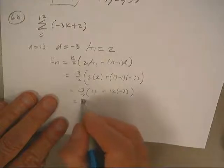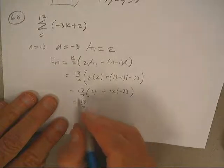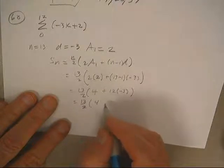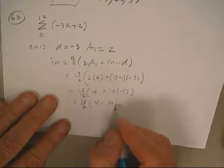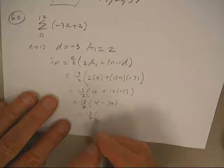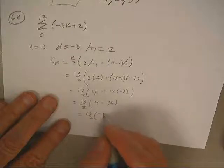Thirteen over seven... ooh, my two changed into a seven. Then I want four minus thirty-six, so I get thirteen halves times negative thirty-two.